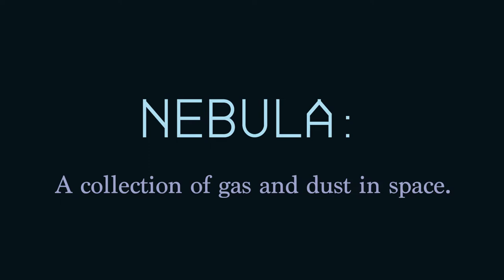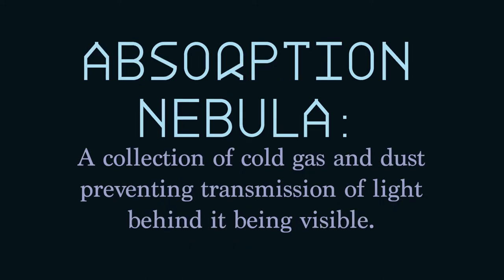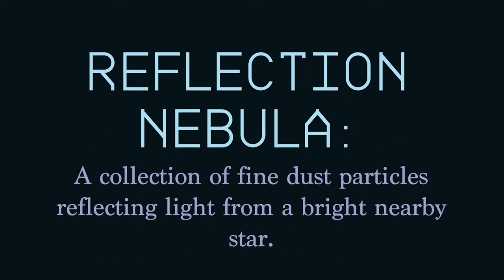There are three types of nebulae. An emission nebula is a hot energized collection of gas, usually hydrogen gas, emitting hydrogen alpha or pink light. An absorption nebula is a collection of cold gas and dust preventing transmission of light from behind it. A reflection nebula is a collection of fine dust particles reflecting light from a very bright nearby star.